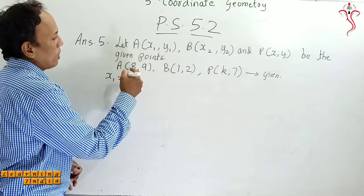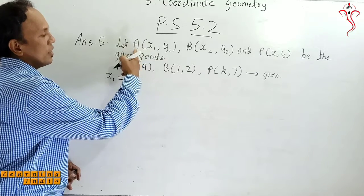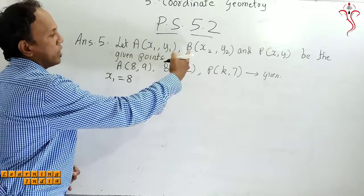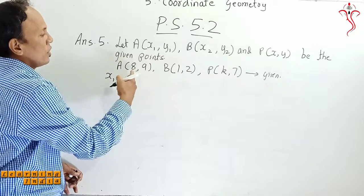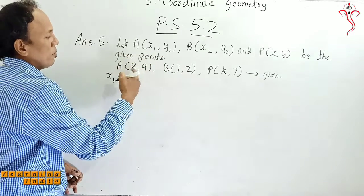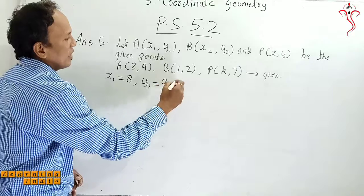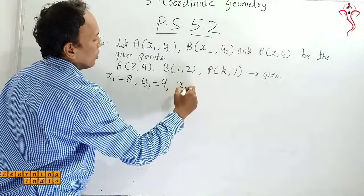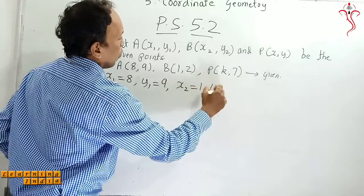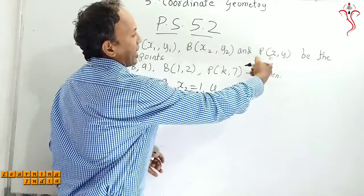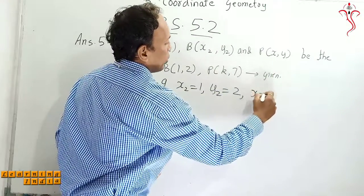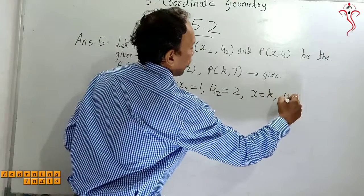X1 value is 8. I have written A(X1, Y1), B(X2, Y2) and P(X, Y) be the given points. So X1 value is 8, Y1 value is 9, X2 value is 1, Y2 value is 2, X value is k and Y value is 7. Correct.